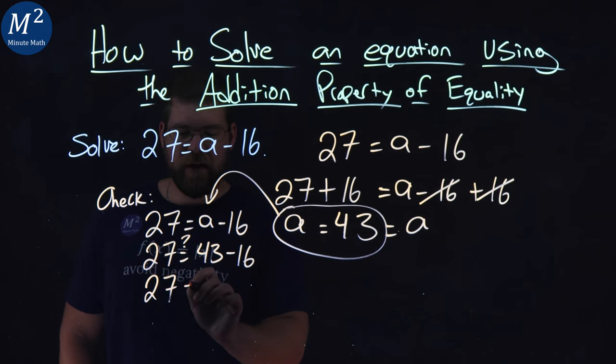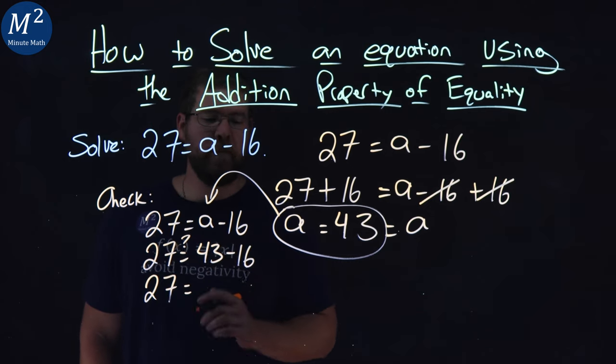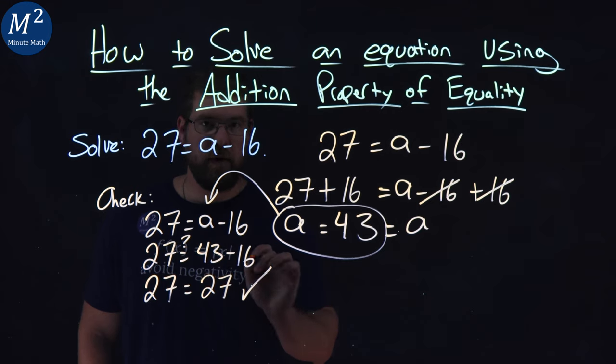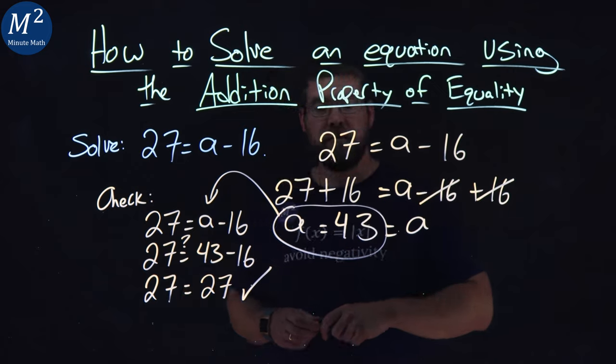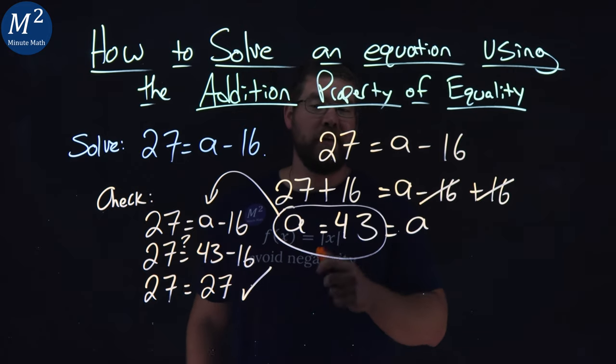Well, 27 stays on the left. Right-hand side, 43 minus 16 is, in fact, 27. So, our check works out. Now, meaning that our answer here to this equation is a equals 43.